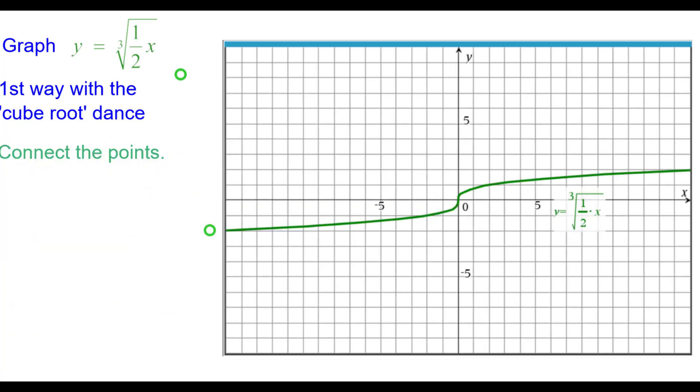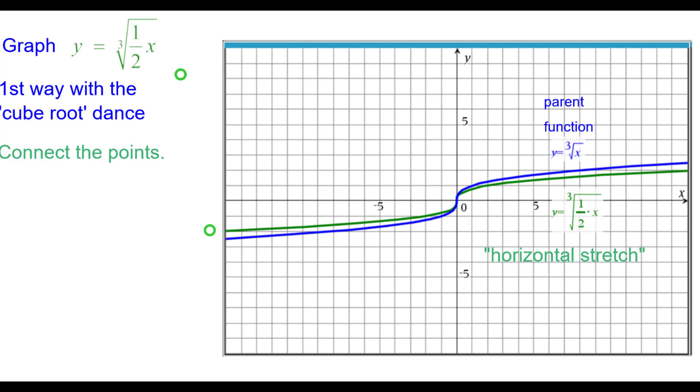So connecting the points we are getting this cube root looking graph. And we will compare it to the parent function. And you can see that from blue to green, green is a horizontal stretch of the parent function.